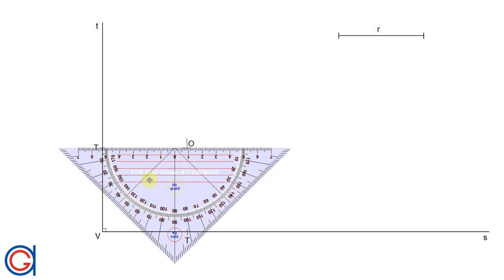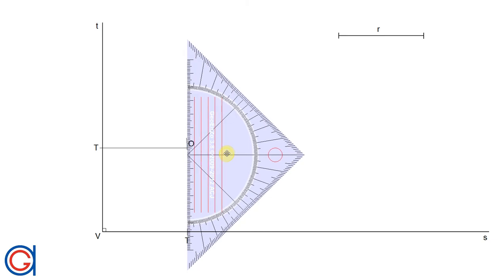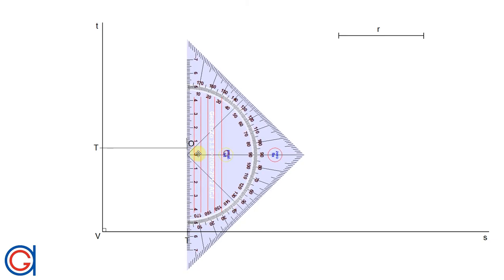So now we are going to join tangent point 1 with center point O and tangent point 2 to the center point O also.